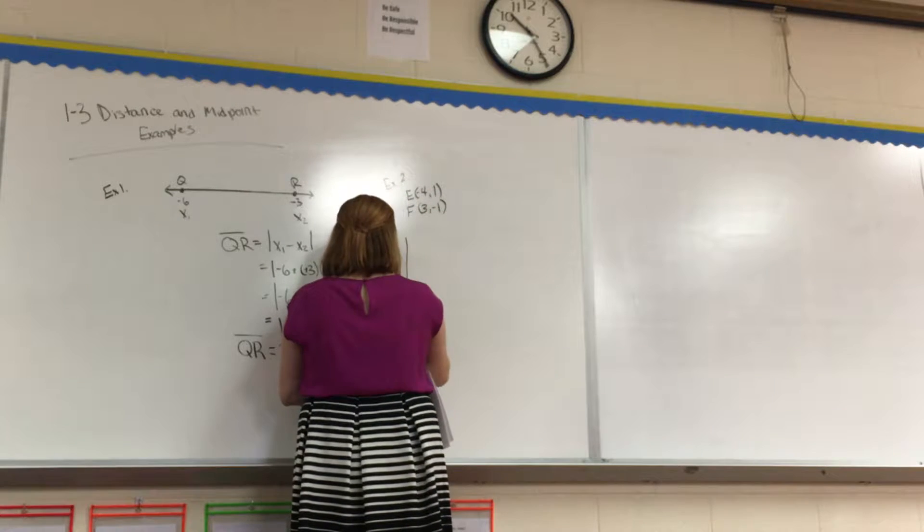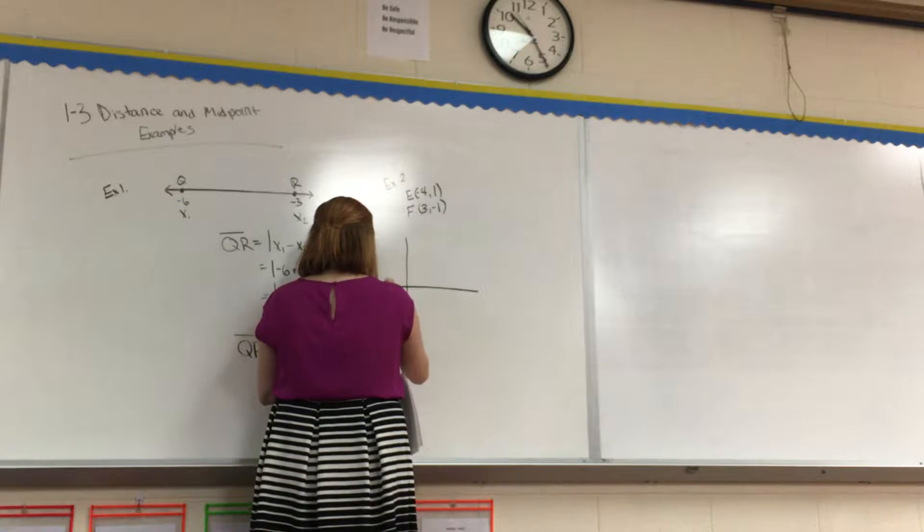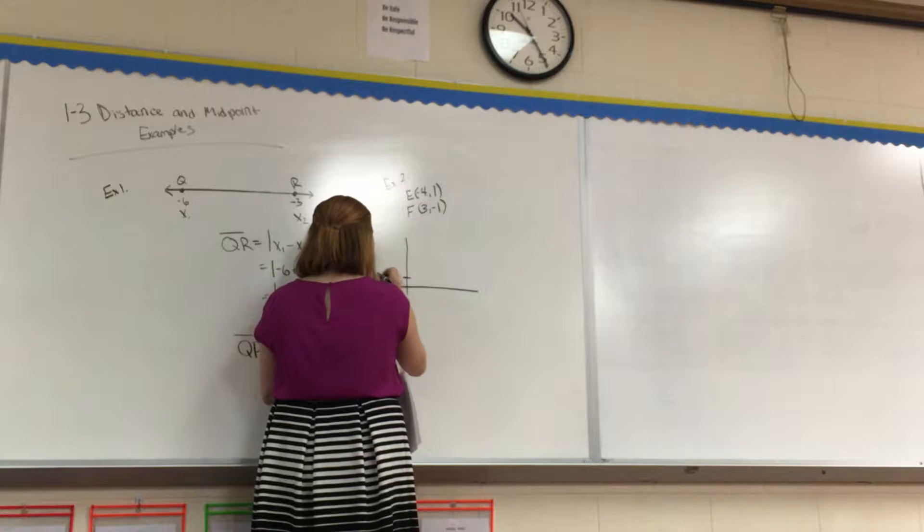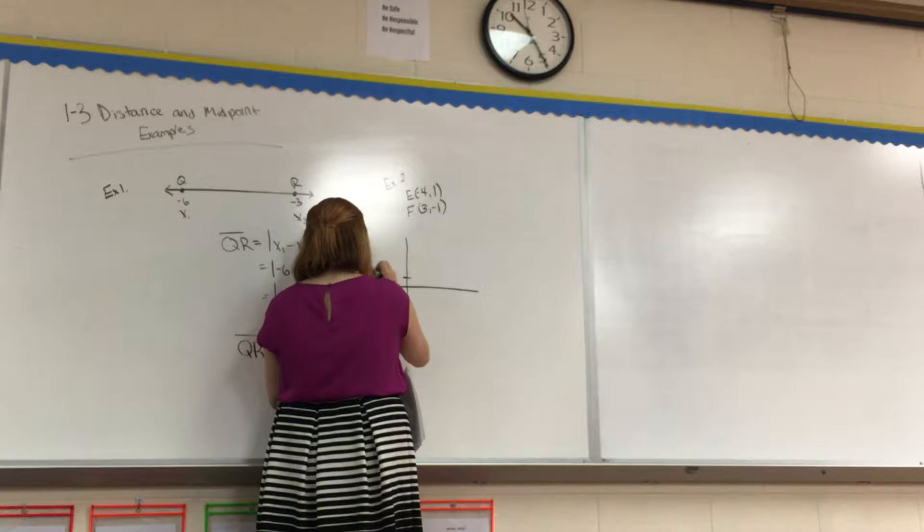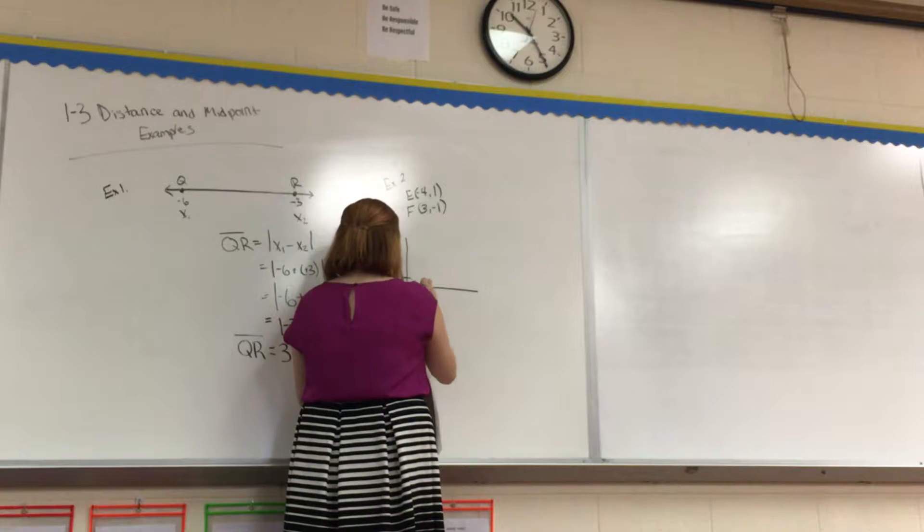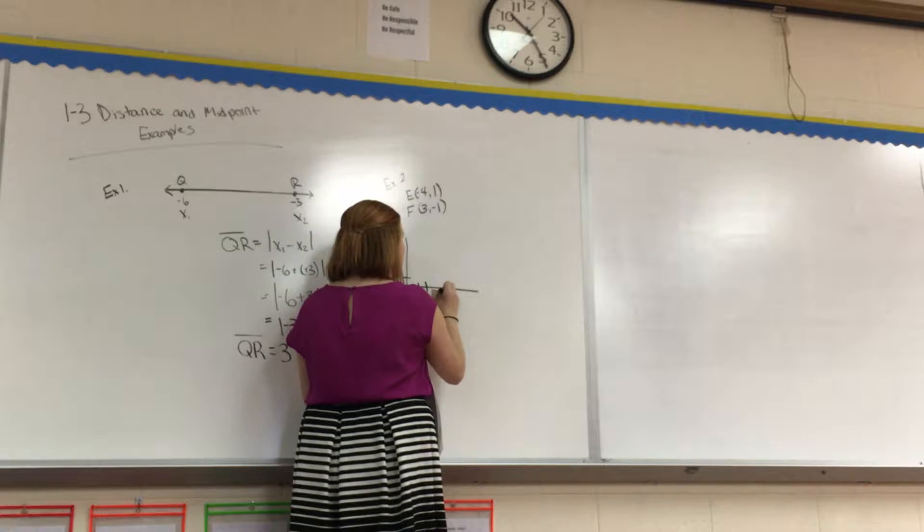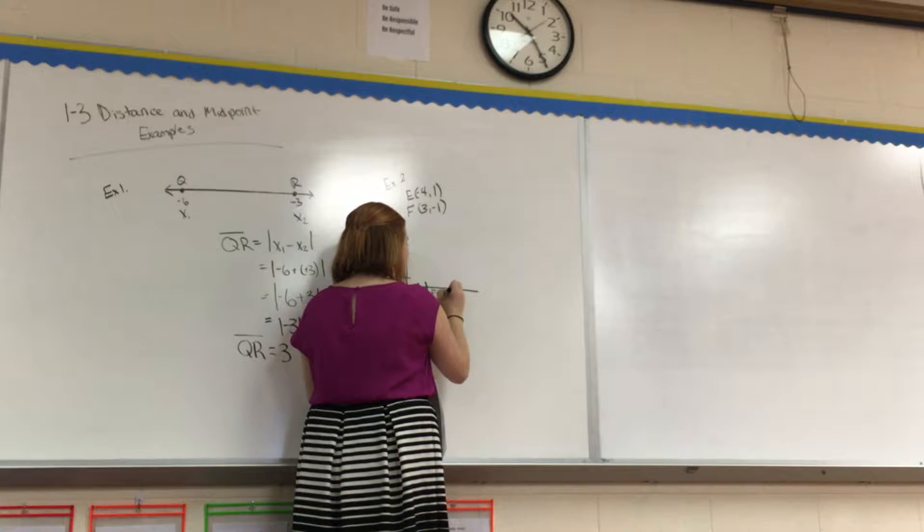If it helps, we can graph this really fast. So we have 1, 2, 3, 4, negative 4, up 1. So here is where E is, negative 4, 1. And then F is at 1, 2, 3, and it's down 1. So it's right here. This is where F is, 3, negative 1.